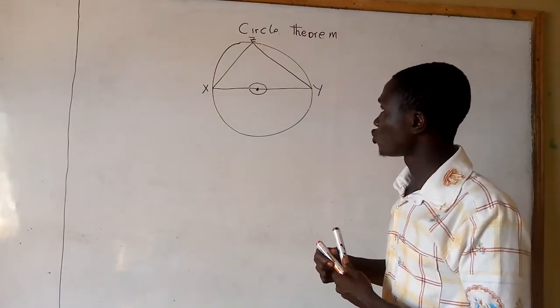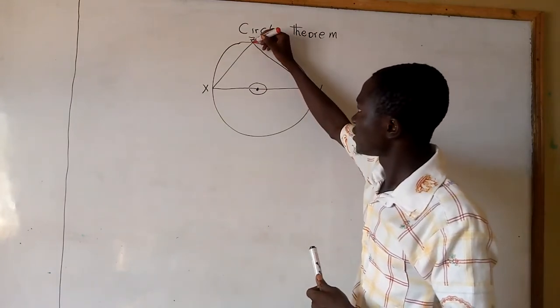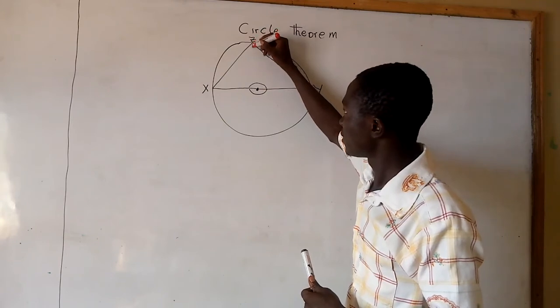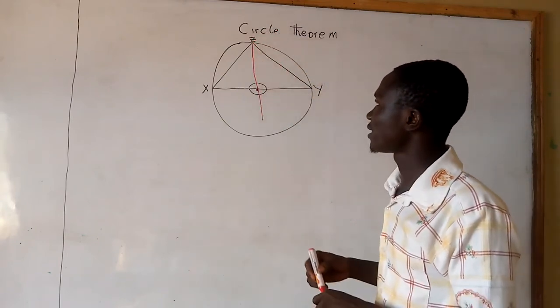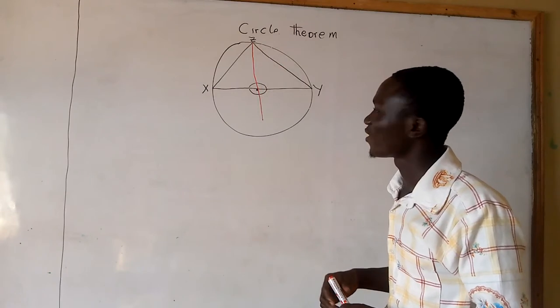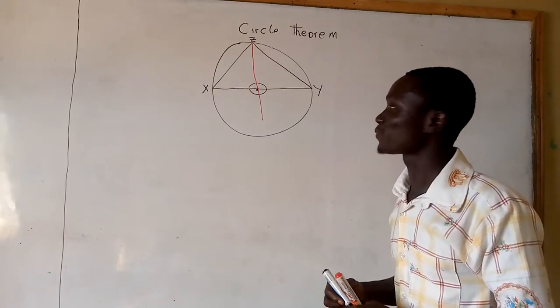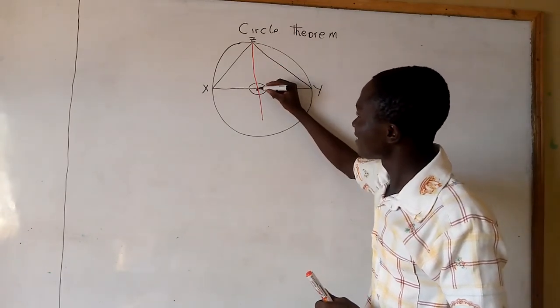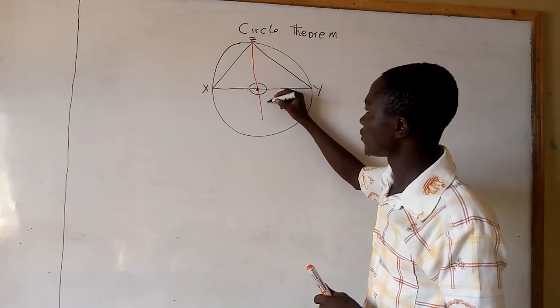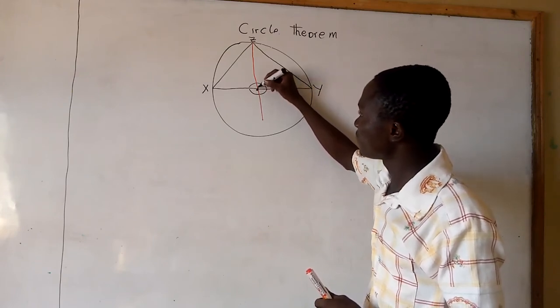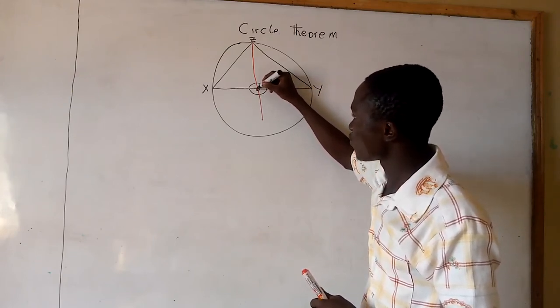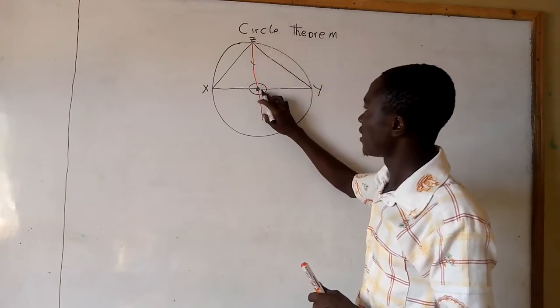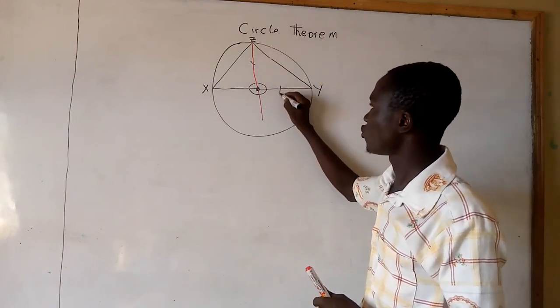Now, let us draw a line from Z to pass through the center of the circle. Since here is the center of the circle, let us name the center as O. OZ is radius and OY is also radius.